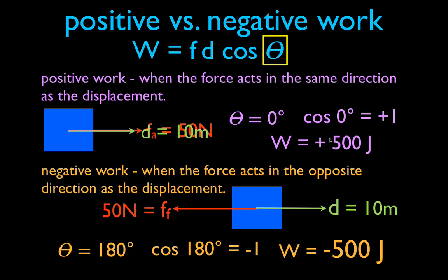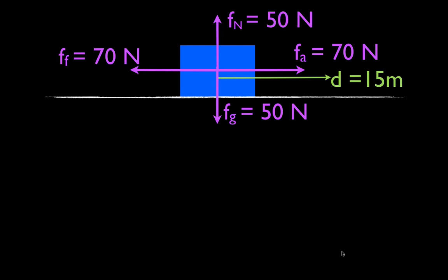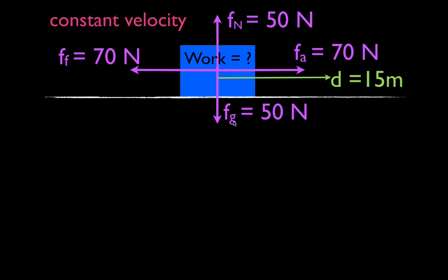If the work is positive, the force is putting energy in; if it's negative, the force is taking energy out. Now let's go through one more example covering negative, positive, and even zero work — forces that don't do any work. We have an object moving to the right 15 meters with four forces: applied, normal, friction, and gravitational. Because the forces are balanced, the object is moving at a constant velocity.